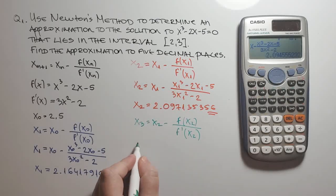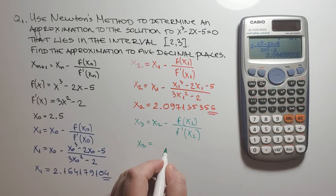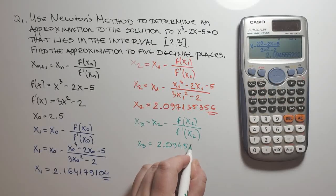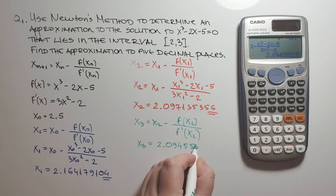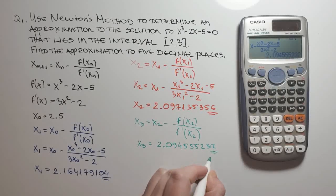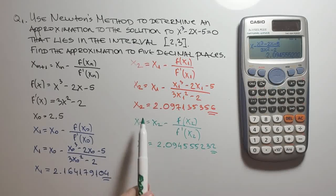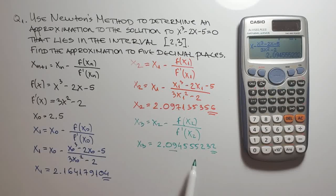Here it is, the third approximation. x sub 3 equals 2.09455232. You see how easy it is. We compare, we have only two decimal places equal from the second and third approximation. So we keep going.